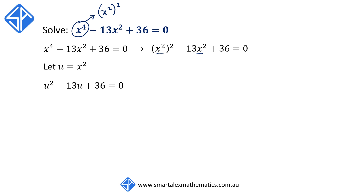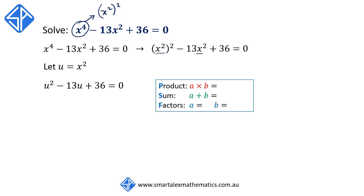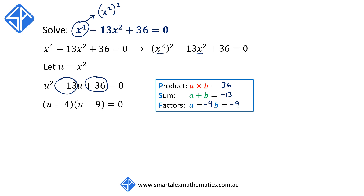This is a monic quadratic equation, which we can solve using the PSF method. We look for two numbers a and b that multiply to give the constant term 36, and also add to give the coefficient of u, which is negative 13. The two numbers that satisfy both conditions are a equals negative 4 and b equals negative 9, since negative 4 times negative 9 is 36 and negative 4 plus negative 9 is negative 13. We can then factorize this quadratic into (u minus 4)(u minus 9) equals 0.